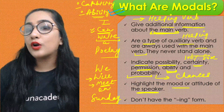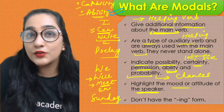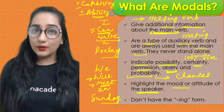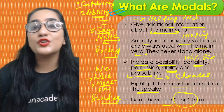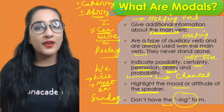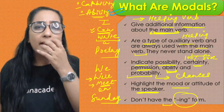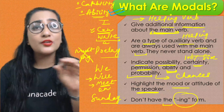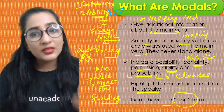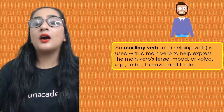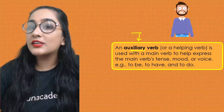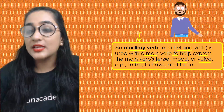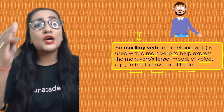Modals also highlight the mood or attitude of the speaker. For example, 'I may come tomorrow' reflects that it depends upon my mood or situation. Importantly, modals do not have the -ing form — adding '-ing' to a modal like 'musting' is completely wrong. An auxiliary verb is a helping verb used with a main verb to help express the main verb's tense, mood, or voice — for example: to be, to have, and to do.